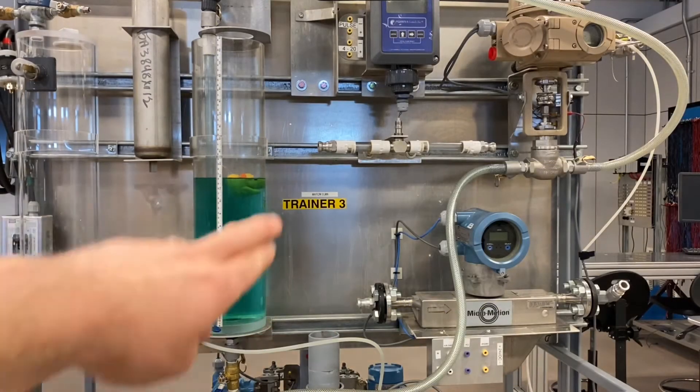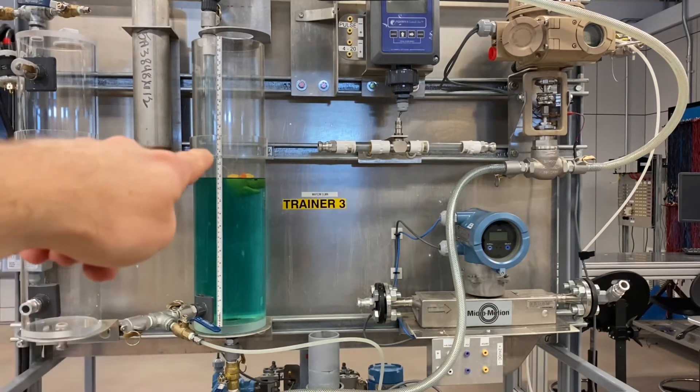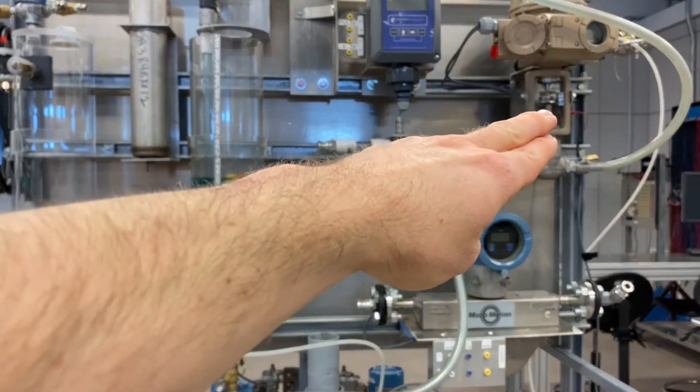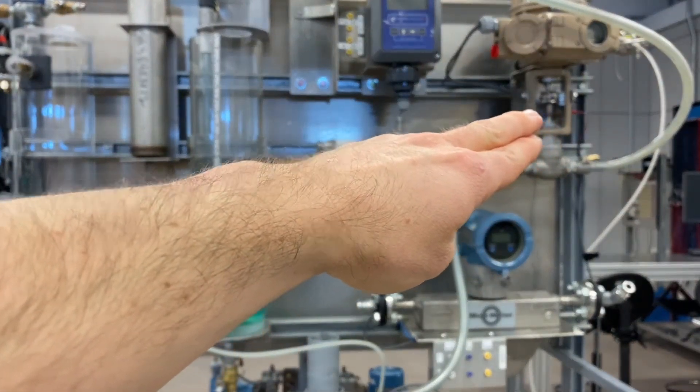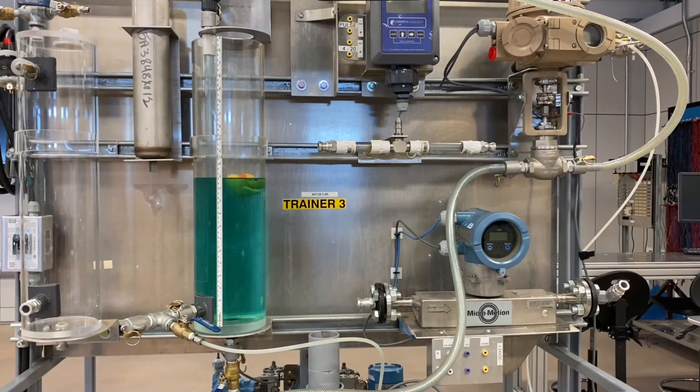Now look over here. Our level is steady. The flow in equals the flow out. Dan's happy. Control valve is about 65% open. It's not moving around, so we're not wearing it out. That's a happy duck.